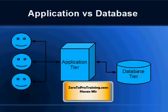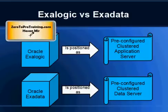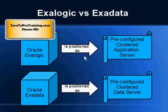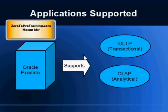If you're buying an Exadata box from Oracle, it goes in the database tier. A quick comparison: ExaLogic is positioned by Oracle as a pre-configured clustered application server, while Exadata is positioned as a pre-configured clustered data server. So if you need application servers, look at ExaLogic; if you need a database tier, look at Exadata. Other appliances exist on the market, but most are geared toward OLAP environments — something different about Oracle Exadata is that it can be used for both OLAP and OLTP.